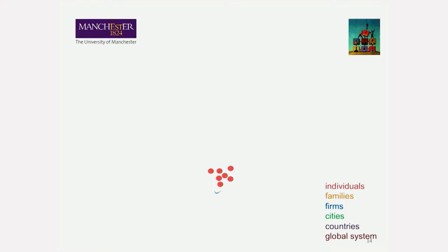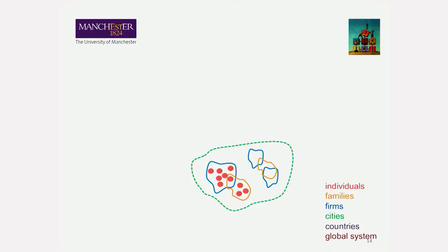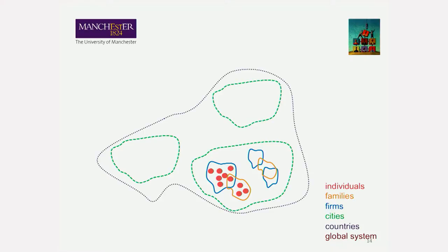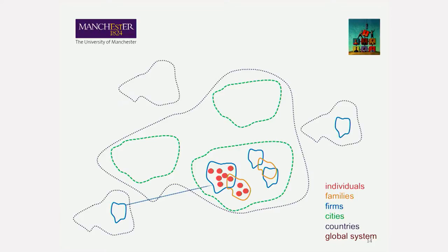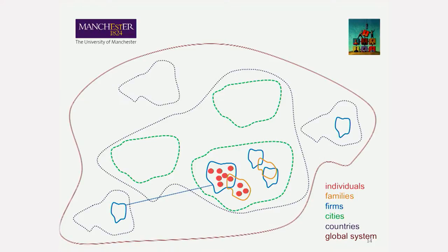There is a little animation showing one way of visualizing the fact that you as an individual are part of many different systems. You are part of a family, you work in a firm or another organization, you live in a city, which is part of a country, which is part of a global society. This picture shows that there are many systems of which you are part, and they sort of fit together almost like Russian dolls nested inside one another.